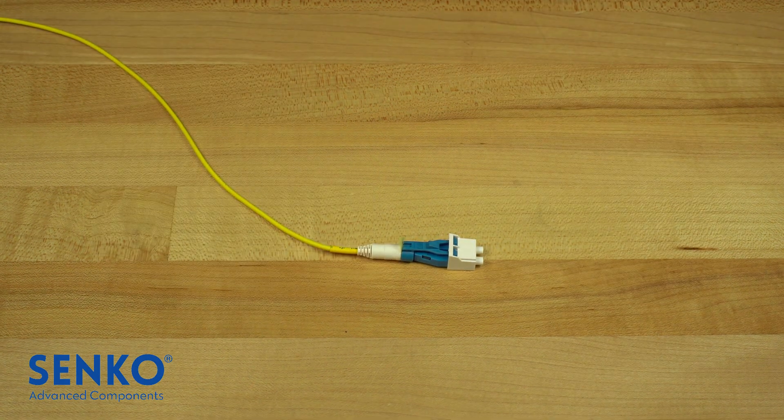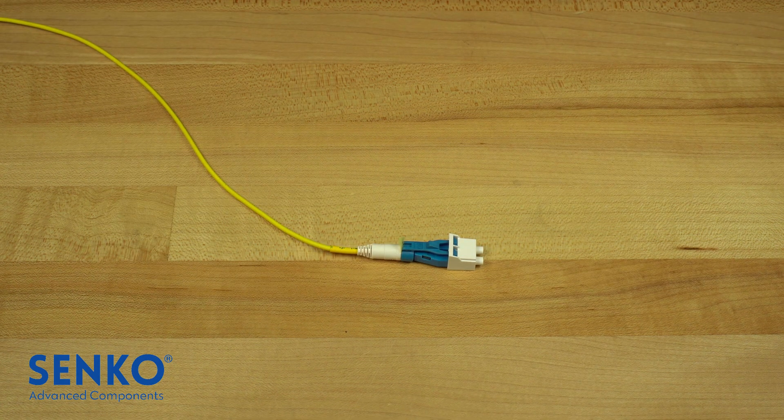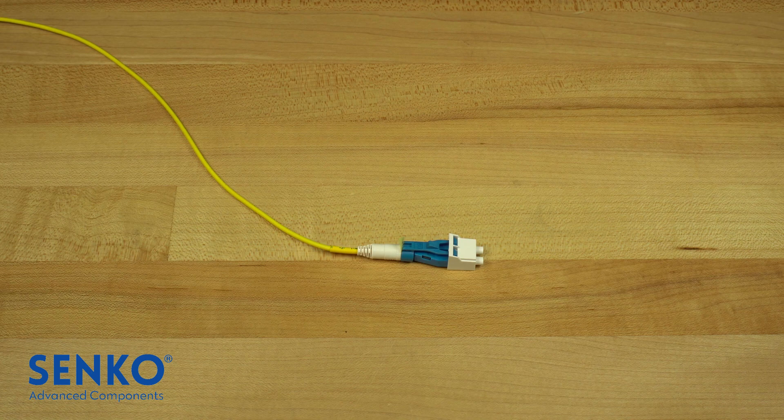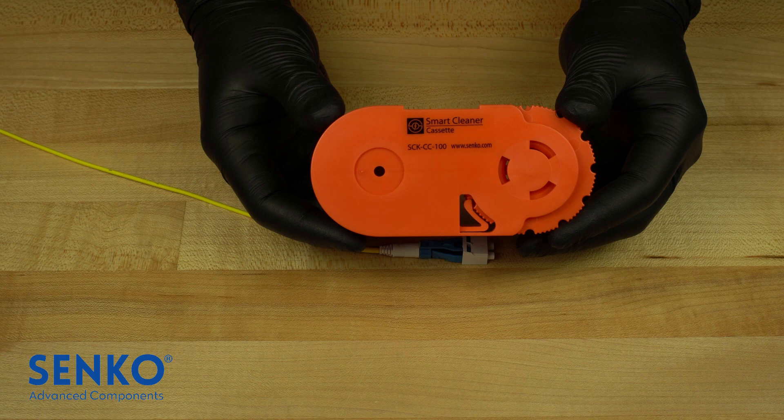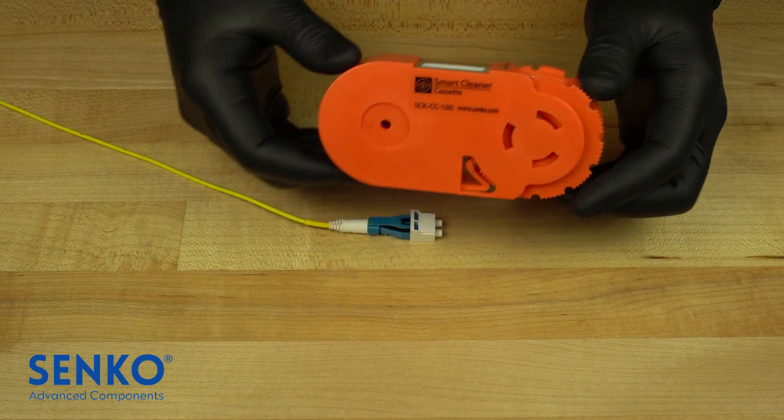If you need more information on polishing your Senko connectors, please contact your local Senko representative. Once polished, it is always recommended to properly clean the connector end face using a proper fiber optic cleaning tool. One of Senko's recommended cleaning tools is the Smart Cassette Cleaner.